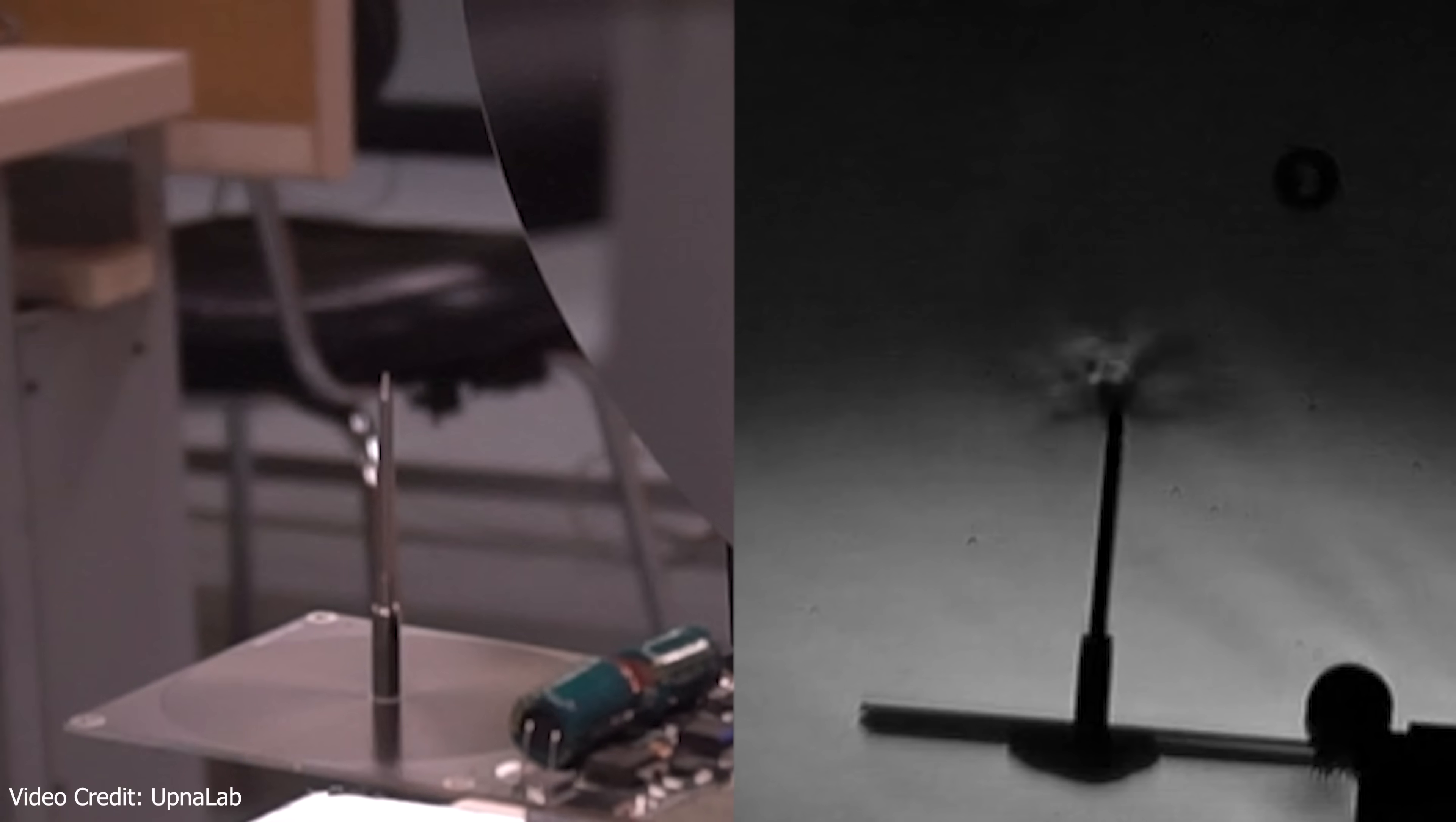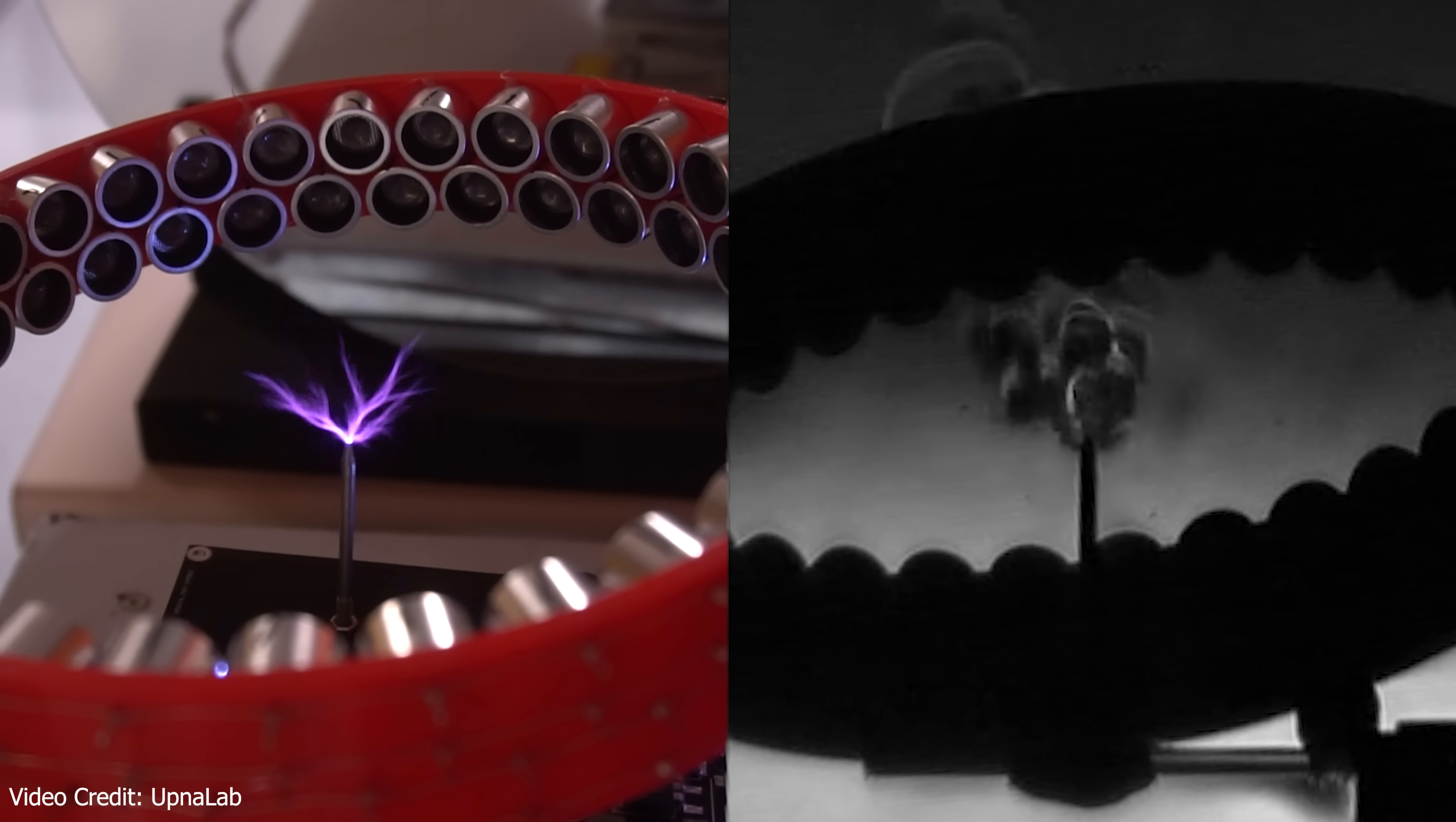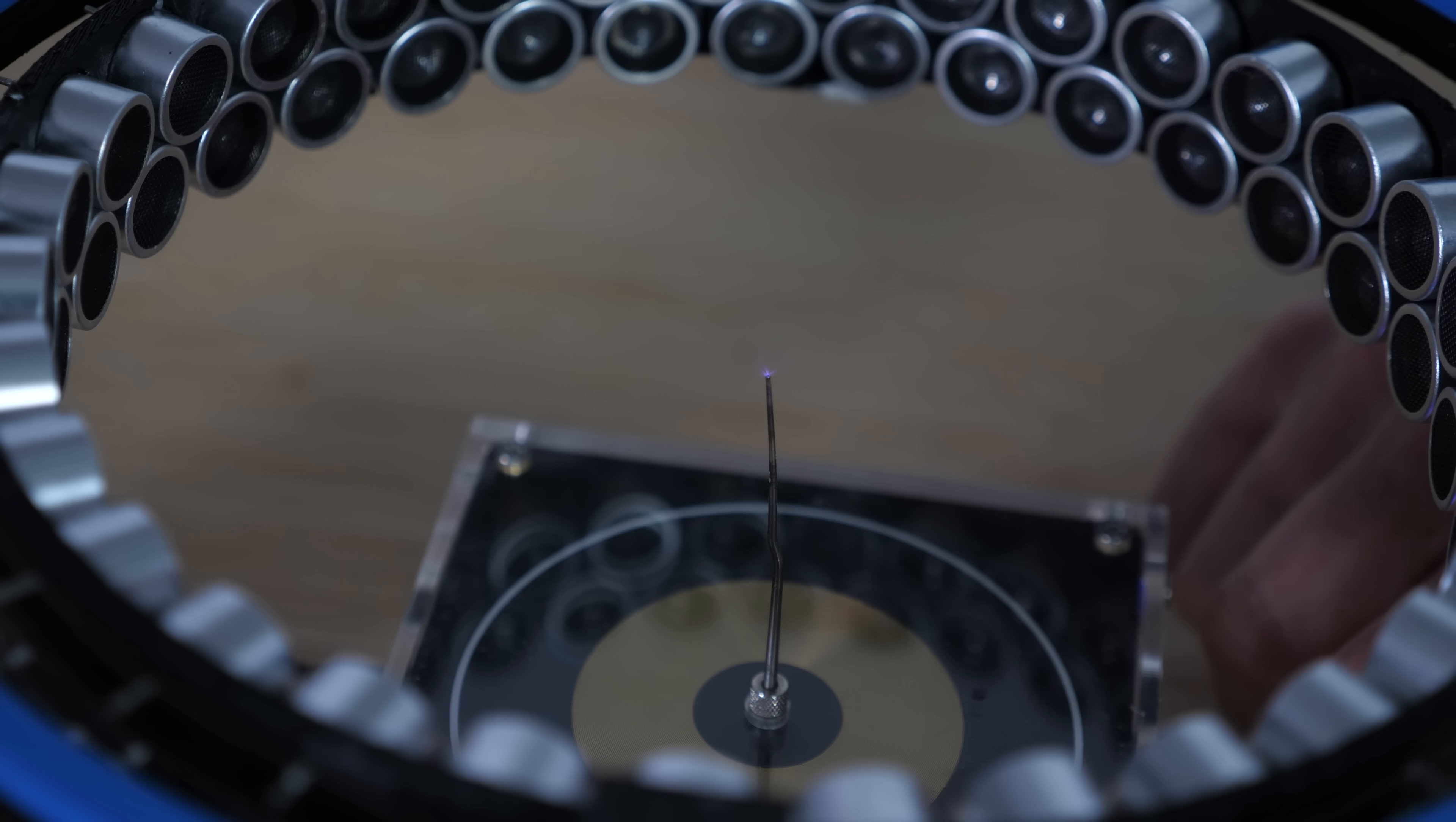So if I take a Tesla coil that's pulsing on and off, then the first few pulses will make some hot air. And then after that, the hot air will be directed to the center of the rings. Now this creates a path for the next sparks to follow. So what you get is a beautiful guided straight line of plasma coming from the Tesla coil instead of a chaotic mess of sparks.